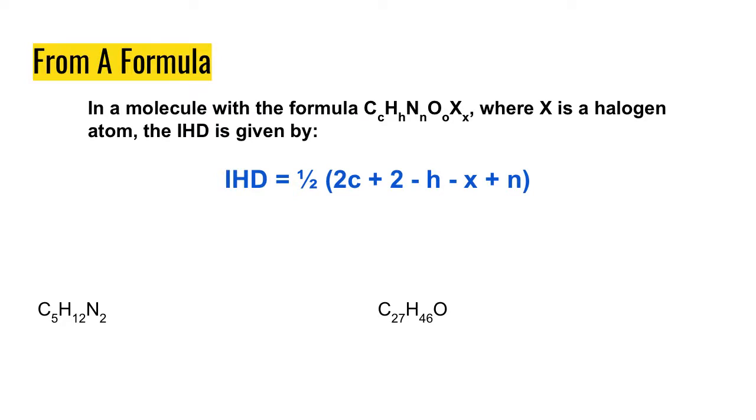So if you have a formula, and your formula is given by this generic equation here, where the small subscripts are telling you how many of each you have, and the larger letters are telling you the element. Where X can be any halogens, so that could be chlorine, it could be fluorine, bromine, etc.